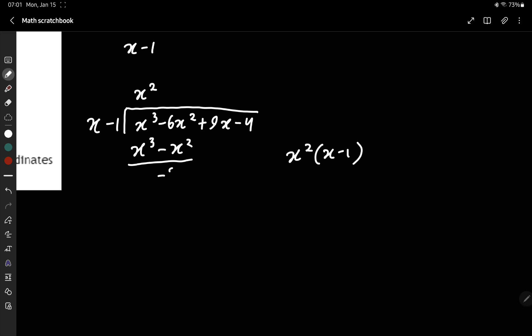We subtract those. Negative 5x squared plus 9x divided by x is minus 5x. Then multiply that out.